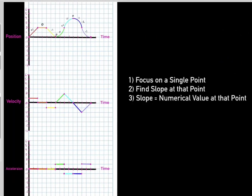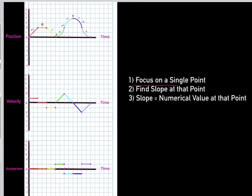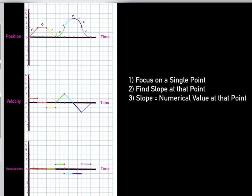I recommend taking a screenshot of this image, because these graphs represent every major graph you'll see in a physics class. The rules are: focus on a single time point at a time, find the slope at that time point, and realize the slope at that time point equals the numerical value of the variable you're interested in at that time point.